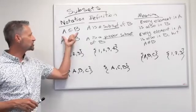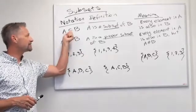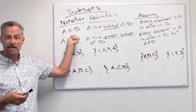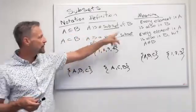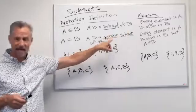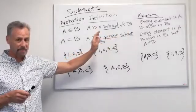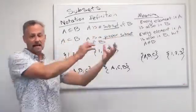This is Professor Monte and we're talking about subsets. I've written the notation, the definition, and the meaning up here. The notation looks like this: A and then it looks like a C with a line underneath. That means A is a subset of B, and what that means is every element in A is also in B. So that's what a subset means—everything in A is in B.